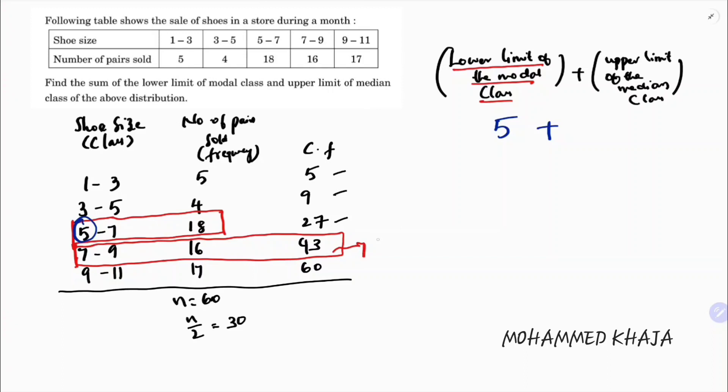The upper limit of the median class is 9. Therefore, 5 plus 9 equals 14, which is the sum of the lower limit of the modal class and the upper limit of the median class.